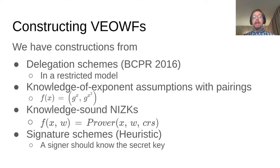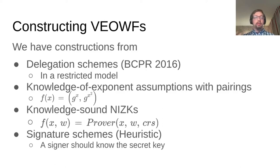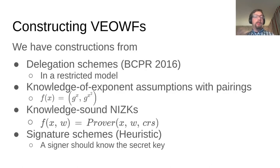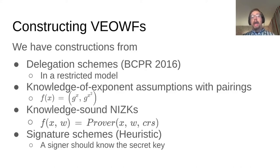We have some constructions of VEOWFs. We have constructions in a restricted model using delegation schemes and some clever ideas, based on work by Bitansky, Canetti, Panett, and Rosen in 2016 — their construction of an extractable one-way function turns out to be verifiable as well. We can also get VEOWFs from knowledge-of-exponent assumptions with pairings. If f(x) = (g^x, g^{x²}), there is a knowledge assumption stating that the only way to produce such a tuple is to essentially know x, and with symmetric pairings in this group, you can verify that the tuple is of the correct form.